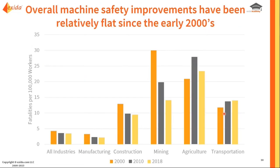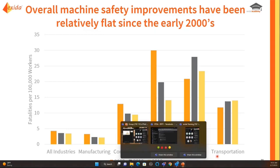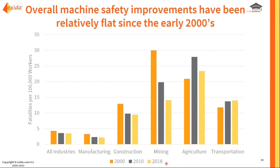The overall machine safety improvements have been relatively flat since the early 2000s. If we pull out data points from 2000, 2010, and 2018 — which was the latest with full data when we pulled this together — we really see that there's not that much of a difference. Certainly the manufacturing industries are slightly safer than they were in 2000, but we're not seeing massive drops between the years as time goes on.